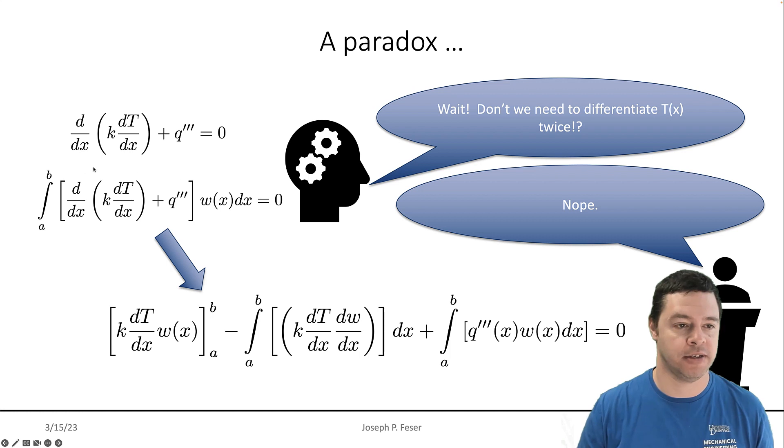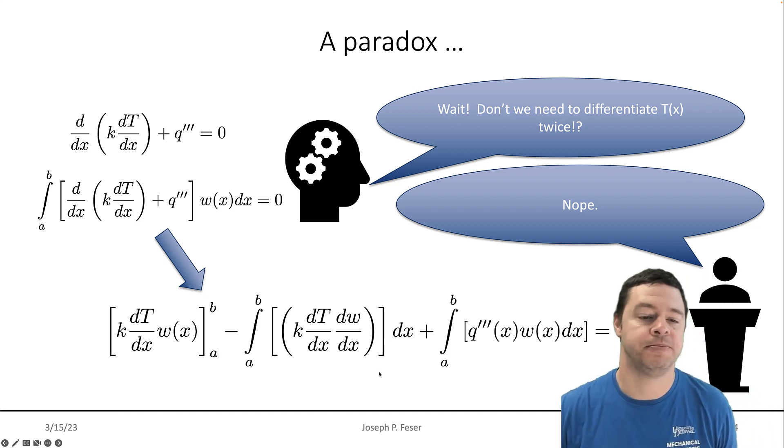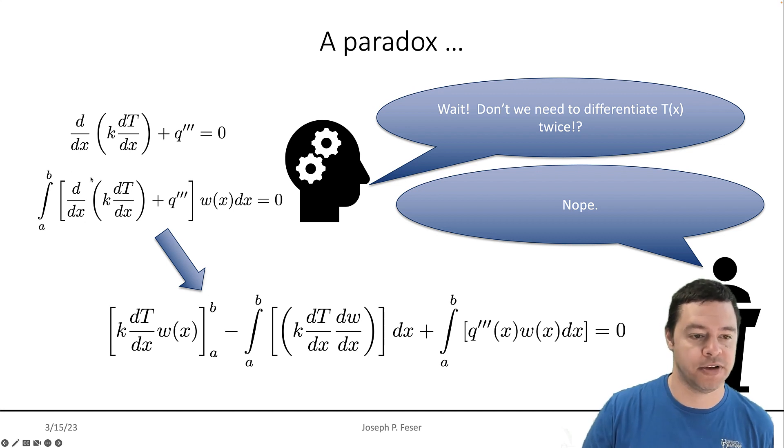And this is part of the genius of the method, is that you can use integration by parts here. So I imagine this is u dv and then I do integration by parts. So that's u times v evaluated at the boundaries minus v du.